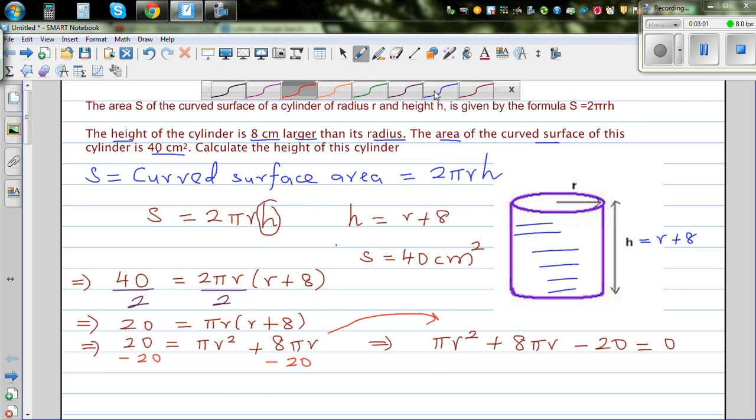The quadratic equation has this general form of ax² plus bx plus c. So those who don't have a graphic calculator, this is the general form. Comparing this with this, I hope you can see a is π, and you're comparing x with r. So b can be compared to 8π, and c is minus 20.